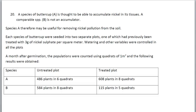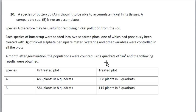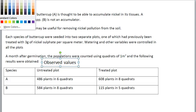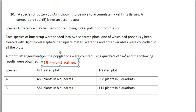This video shows you how to recalculate the expected value from an observed value. For example, you have a problem where you have two species of buttercup, A and B — one of them accumulates nickel and the other does not. You grow them in two different plots, and in one plot you treat with three grams of nickel. After three months of germination you get these results — this is your observed value, which is whatever value you get from your experiment.